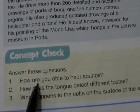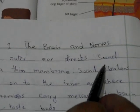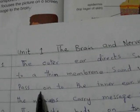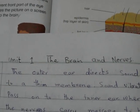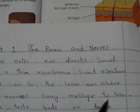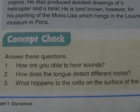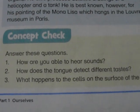Question one: How are you able to hear songs? The answer is: the outer ear directs sound to a thin membrane. Sound vibrations pass on to the inner ear, where the nerves carry the message to the brain. This is the answer of question number one.